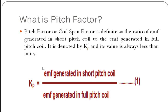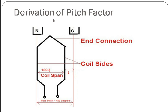As per the definition of pitch factor, Kp will be equal to EMF generated in short pitch coil divided by EMF generated in a full pitch coil. Let us now derive the formula for pitch factor. The figure here shows a short pitch coil in which the two coil sides are separated by a space angle of 180 degrees minus zeta. This separation between the two coil sides is known as coil span, which is equal to 180 degrees minus zeta.